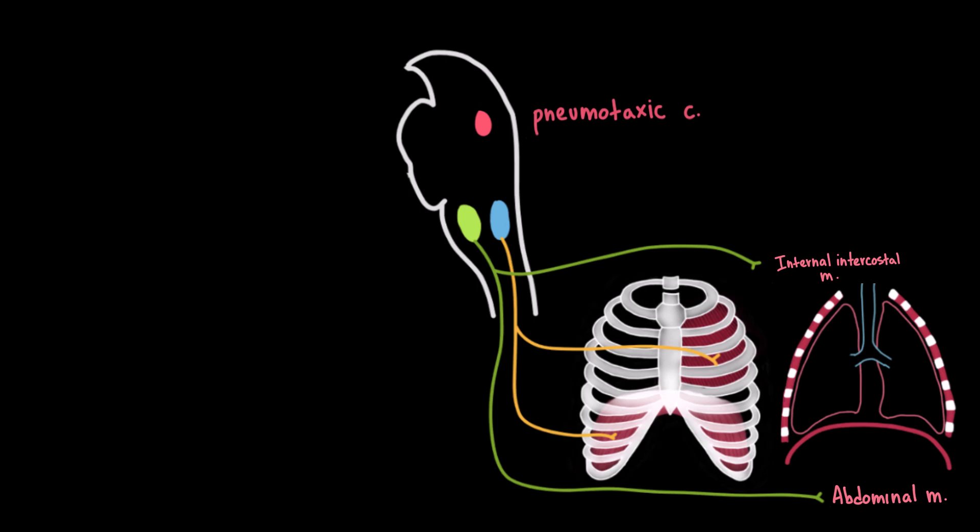The pneumotaxic center sends inhibitory signals to the dorsal respiratory group, and its main role is to help terminate inspiration by stopping the inspiratory signal at the appropriate time. It allows the transition from inspiration to expiration. This fine-tuning helps regulate the respiratory rate by controlling how long each breath lasts.